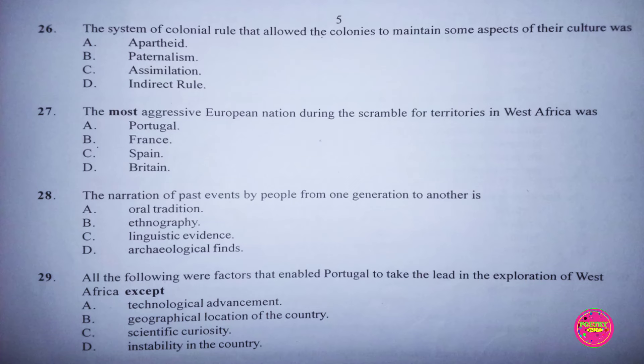Question 27. The most aggressive European nation during the scramble for territories in West Africa was: A. Portugal, B. France, C. Spain, D. Britain. The correct answer to this question is B. France.